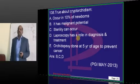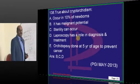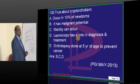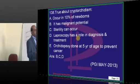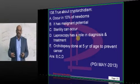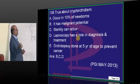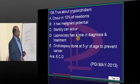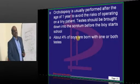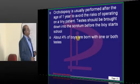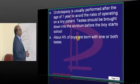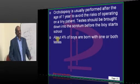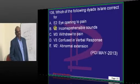Cryptorchidism can lead to development of seminoma in the undescended testis, and can cause sterility. The undescended testis may be in the inguinal canal, so laparoscopy has a role in diagnosis. Orchidopexy should be done within one year, and the testis should be brought back into the scrotum before the boy goes to school.